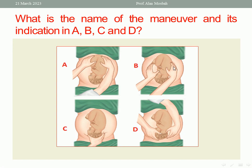In figure B: this is the para-umbilical grip. The indication is to detect where the fetal back is — is it anterior or posterior, to the right or to the left, or directly anterior or posterior? I'm doing the para-umbilical grip to know where the back is. In this case, the back is directed anteriorly and to the left side of the mother — so this is called left anterior. The back is anterior and to the left, so I can feel the convexity of the back while doing the para-umbilical grip.